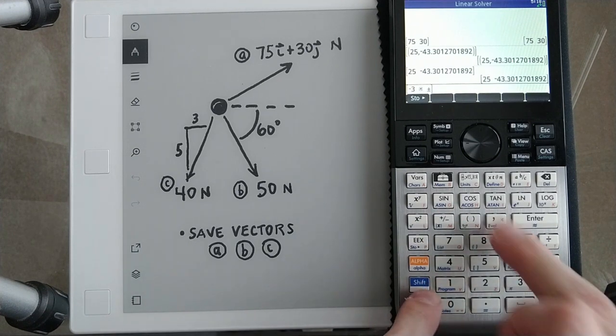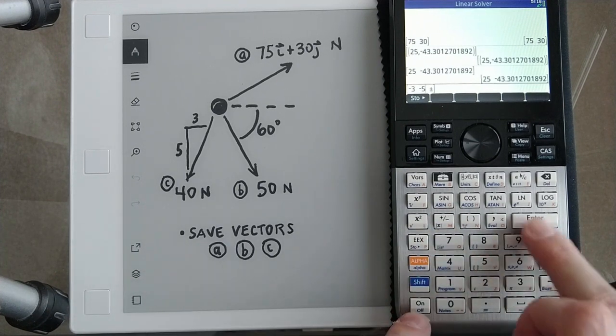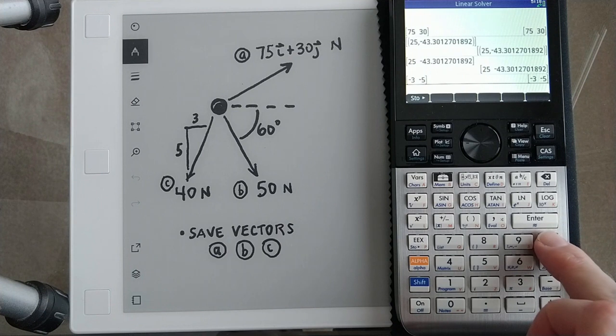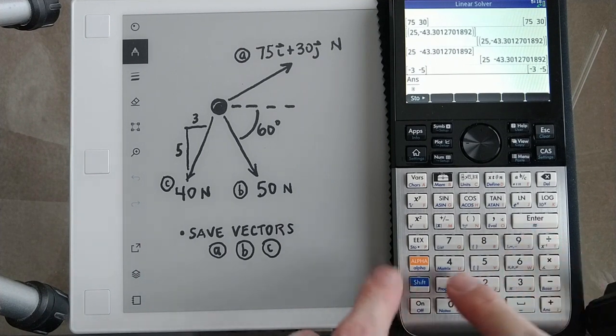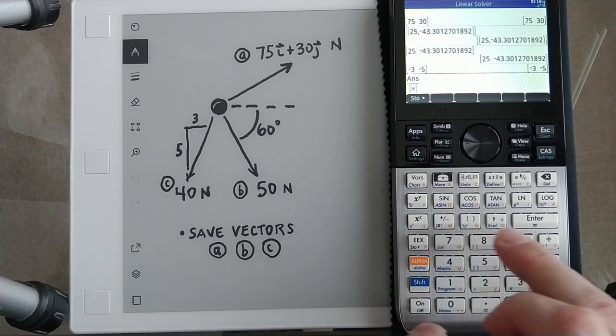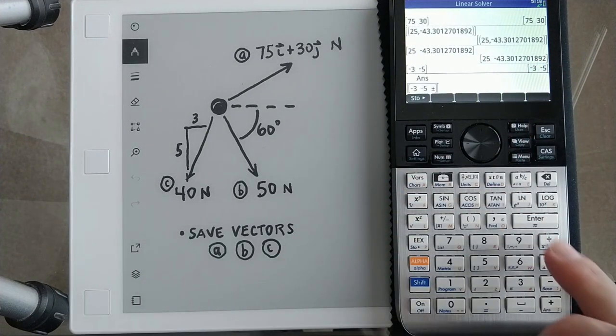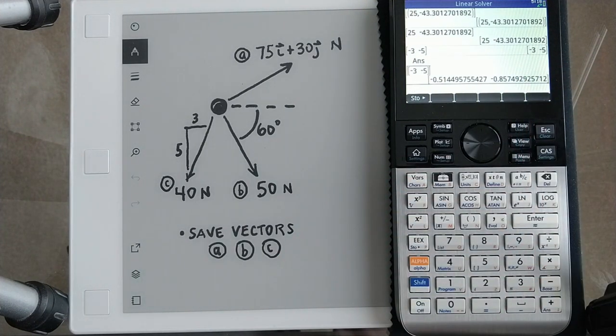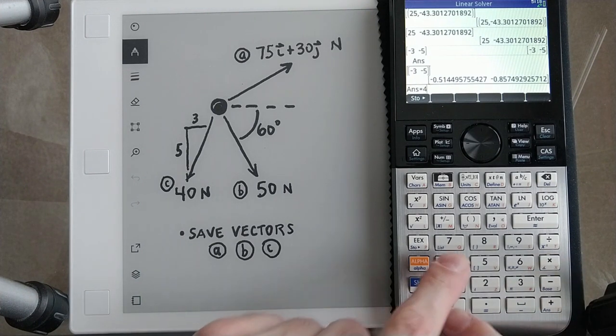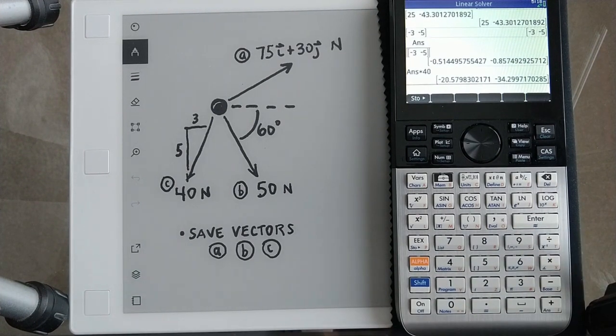This one's negative three and negative five, but then we also needed to get the unit vector of that. So we're going to divide by the magnitude or absolute value of, I'm going to select it, hit copy. So there you go. There's our unit vector times 40. All right. So there we have our three vectors.